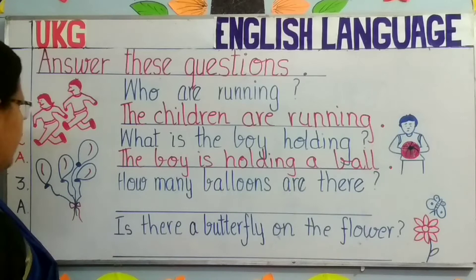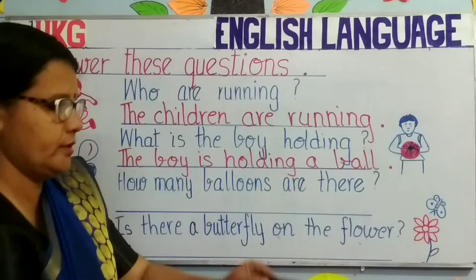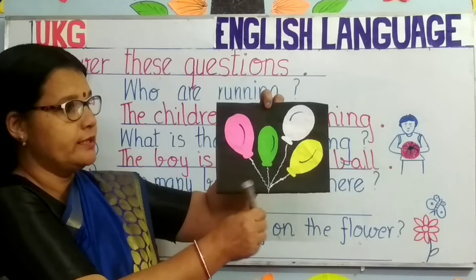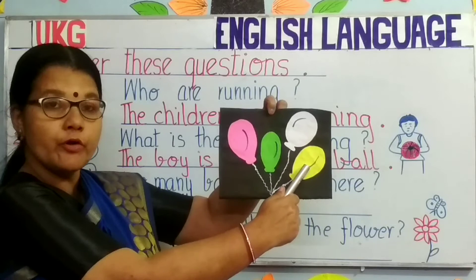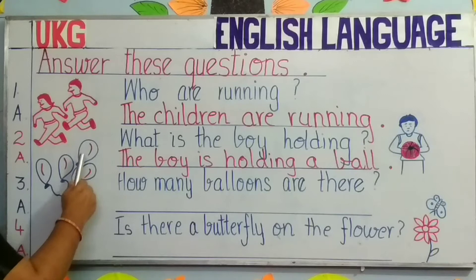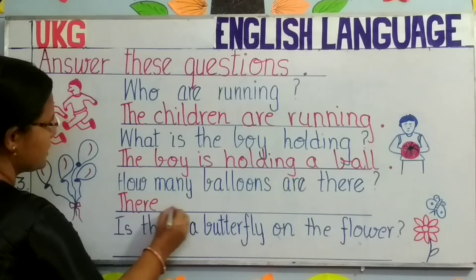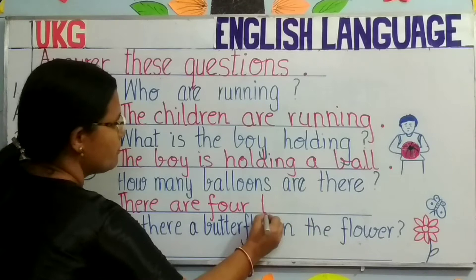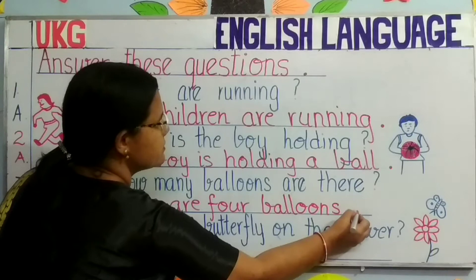Come to the third question now. Look at this picture, children. You can see a few balloons, and you need to count these balloons: 1, 2, 3, 4. And the question on the board is: How many balloons are there? Here also there are a few balloons which you need to count: 1, 2, 3, 4. Then you will write: There are four balloons. Begin with a capital letter, end with a full stop.